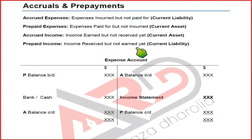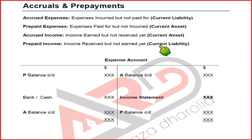Prepaid income is income received but not yet earned. For example, if you pay school fees at the start of the month before attending all classes, the school has received payment but hasn't yet provided the services. The school will earn this income only when they actually teach the classes. Therefore, fees received in advance are a liability for the school.